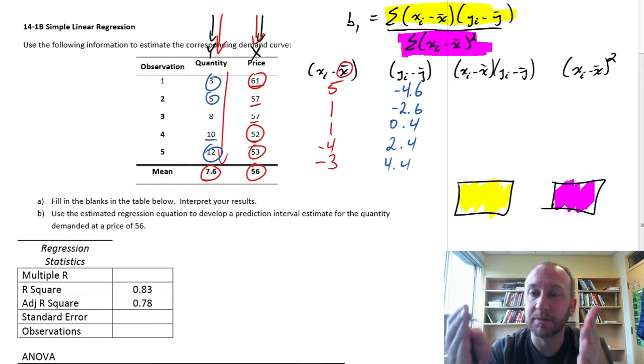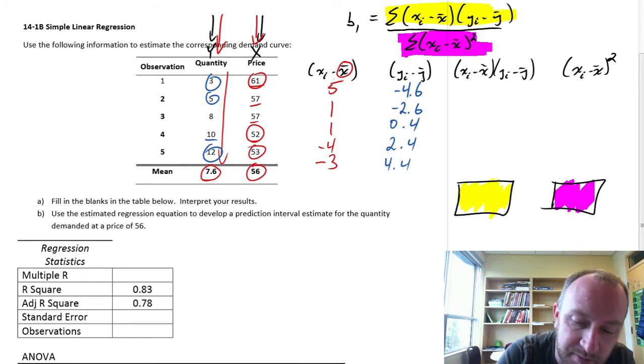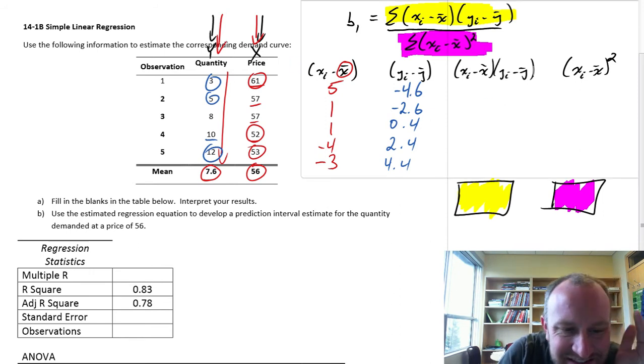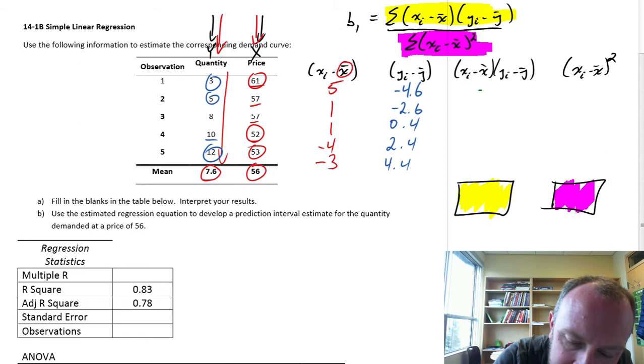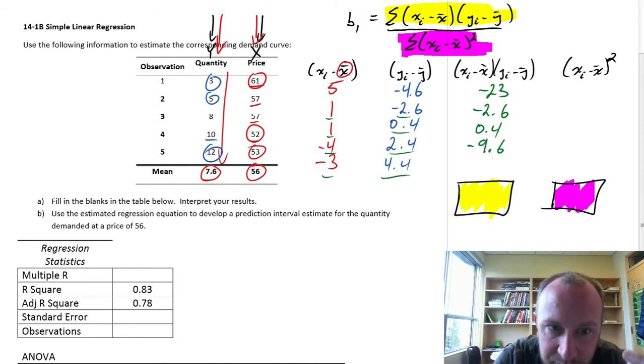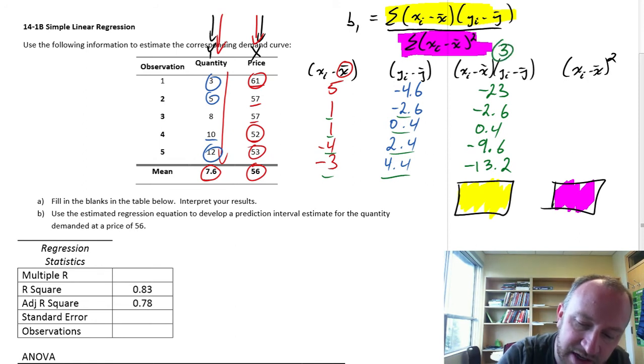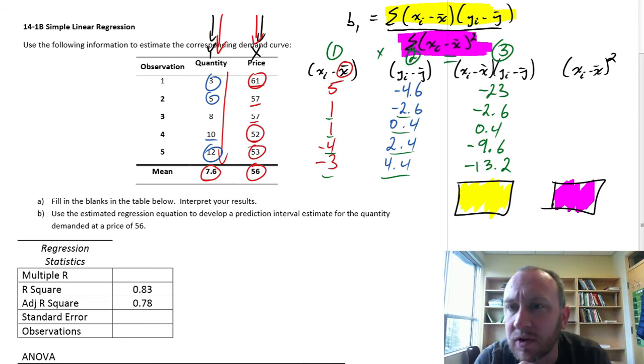We've got all the differences. Now, our next column, we multiply those two columns together. This is 5 times minus 4.6, which is minus 23. Then 1 times minus 2.6 is minus 2.6. 1 times 0.4 is 0.4. Minus 4 times 2.4 is minus 9.6. And the last one, minus 3 and 4.4, is minus 13.2. This is column 1 times column 2 equals column 3.